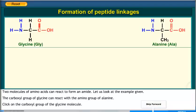Two molecules of amino acids can react to form an amide. Let us look at the example given. The carboxyl group of glycine can react with the amino group of alanine. Click on the carboxyl group of the glycine molecule.